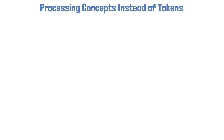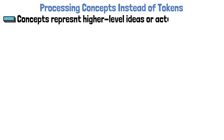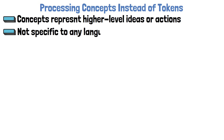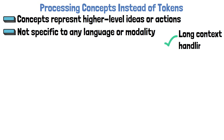Unlike traditional large language models that process tokens, large concept models work with concepts. Concepts represent the semantics of higher-level ideas or actions and are not specific to single words. Additionally, concepts are not even specific to language and can be derived from multiple modalities. For example, the concept behind a certain sentence may remain the same whether it is provided in English, a different language, or through text or voice. Another benefit is better handling of long context inputs, since the concept sequence is an order of magnitude shorter than the token sequence for the same input.